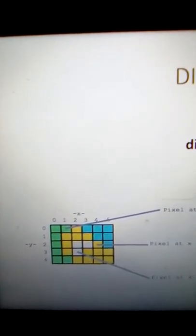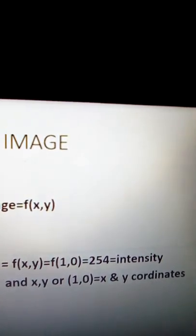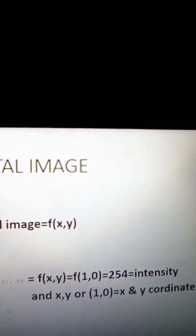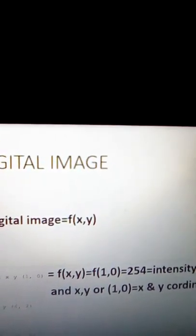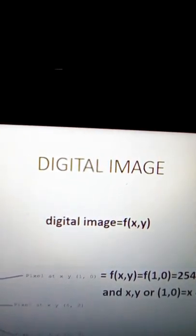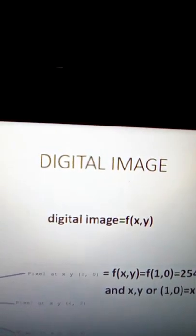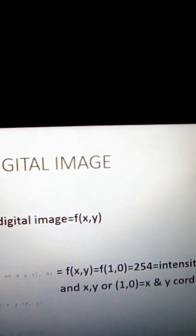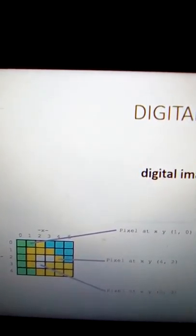If we consider a binary image, then it has intensity 0 or 1. You may see here that these x and y coordinates are finite — in this image 0 to 5 are the x coordinates and at the bottom y goes from 0 to 4. Because these coordinates are finite and these intensities from 0 to 255 are also finite, these are finite or digitized values. That is why it is known as a digital image — because it represents finite values.